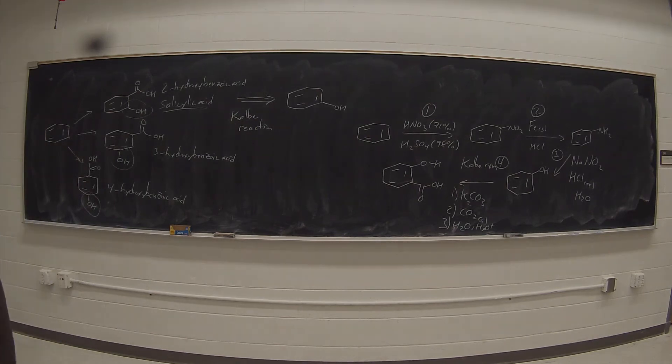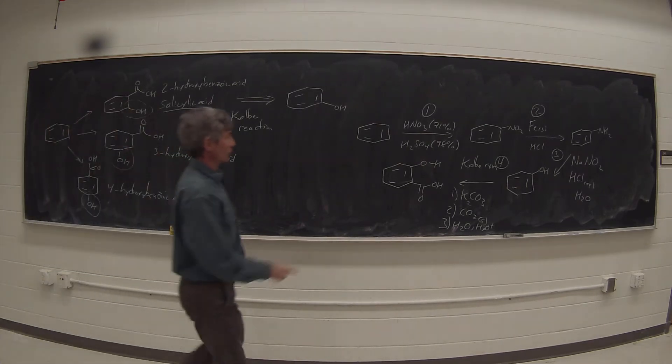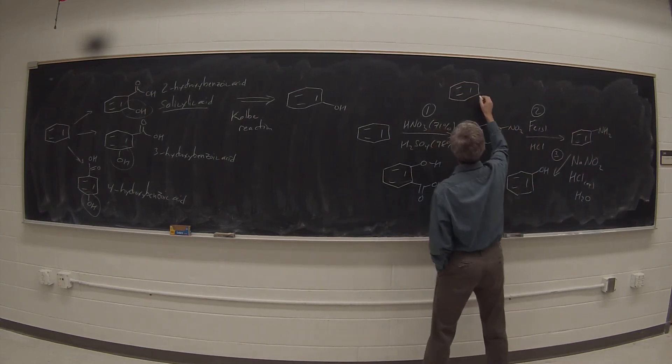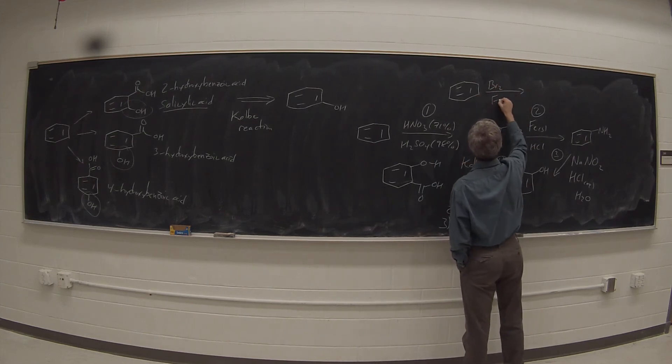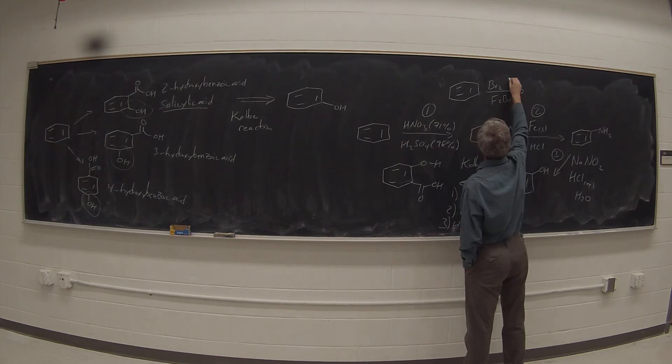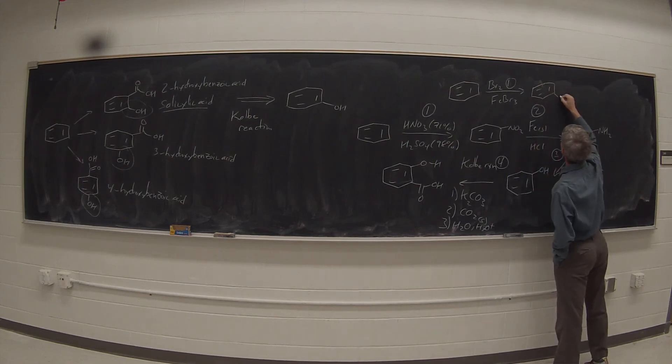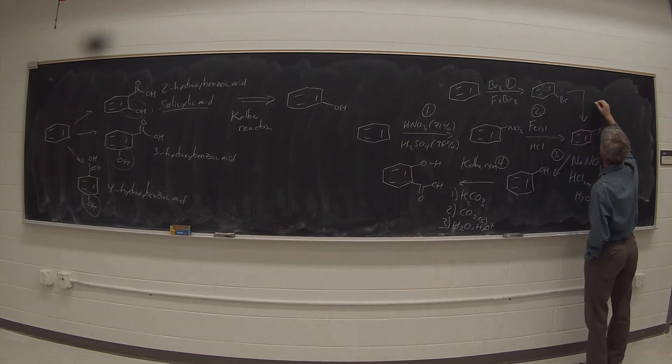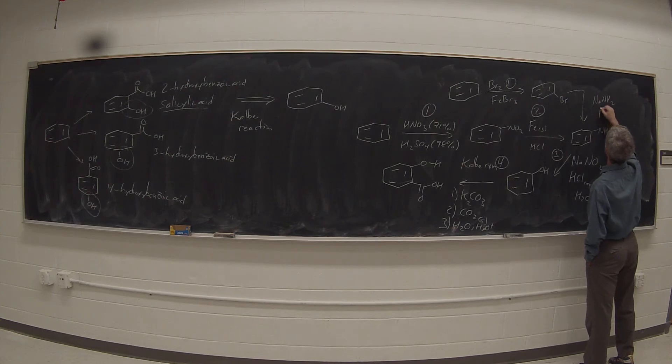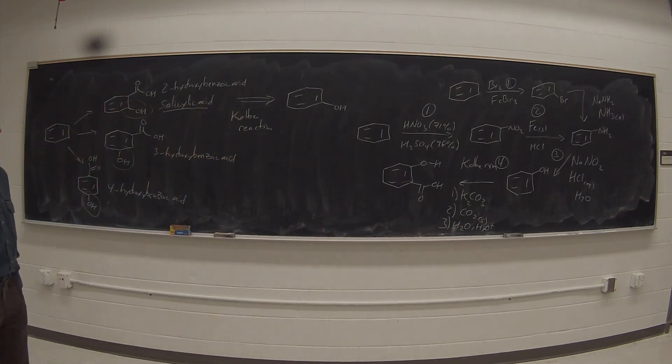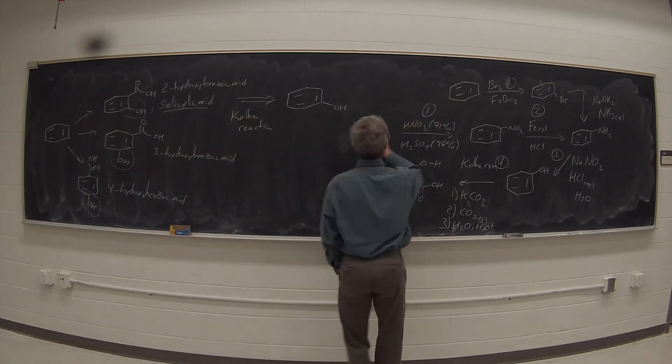Nitrate, reduce, diazonium salt quenched with water to form the phenol, and then the Kolbe reaction. Alternatively, we could have gotten here in two steps by brominating with Br2 and FeBr3, and then reacting that with NaNH2 amide ion and NH3 liquid. But it's still a four-step synthesis. It still takes us two steps to get an NH2 group on a benzene ring. So we've solved the problem of making 2-hydroxy.